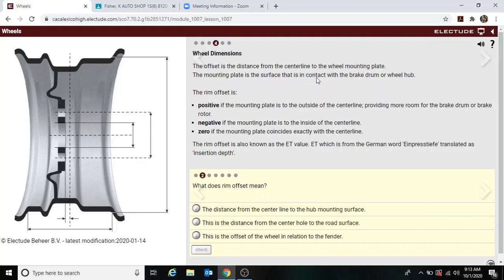The mounting plate is a surface that is in contact with the brake drum or wheel hub. The rim offset is positive if the mounting plate is on the outside of the center line, providing more room for the brake drum or brake rotor. Negative if the mounting plate is on the inside of the center line, and zero if the mounting plate coincides exactly with the center line. The rim offset is also known as the ET value, which is from the German word—I'm not even going to try to say it—translated as insertion depth.